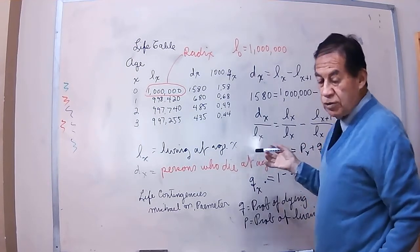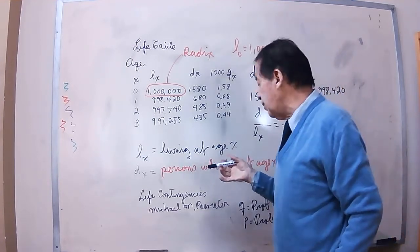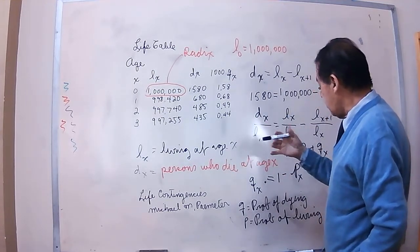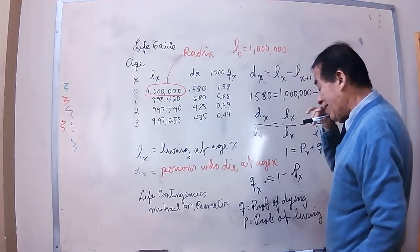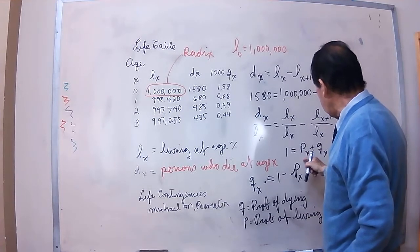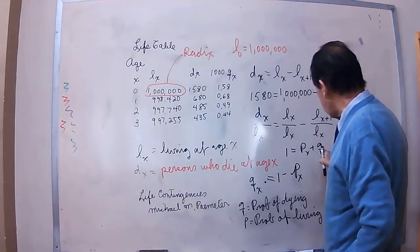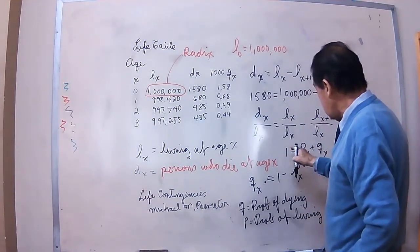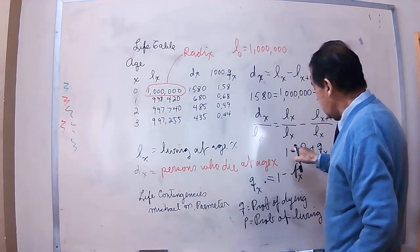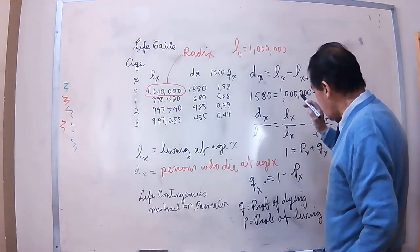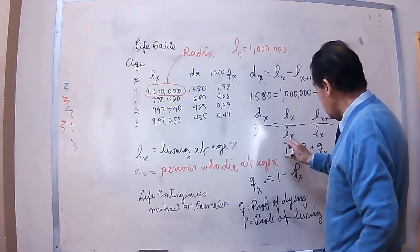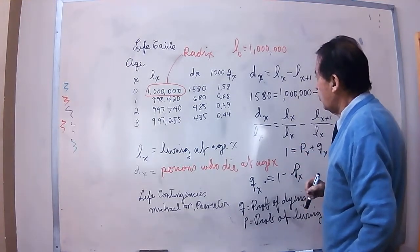A person has only two possibilities: that person can live or that person can die. The probability of living plus the probability of dying is always 1, meaning P_x plus Q_x always equals 1. In other words, it cannot be more than 1 or less than 1 — it is always 100%.